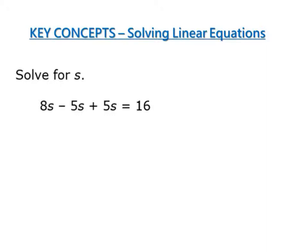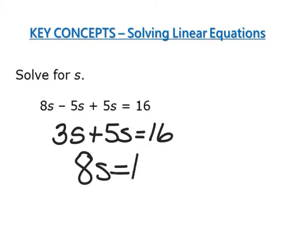In this example, I have multiple variables. So I'm just going to combine these and then divide 16 by that. So let's start out with combining my s's. I have 8 minus 5, which is 3s. 3s plus 5s equals 16. I divide both sides by 8. I get s equals 2.